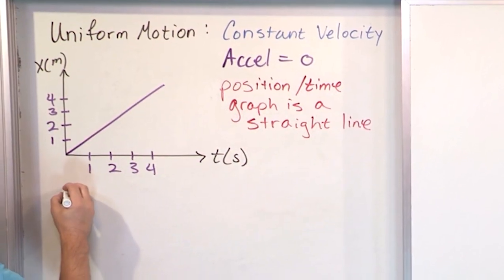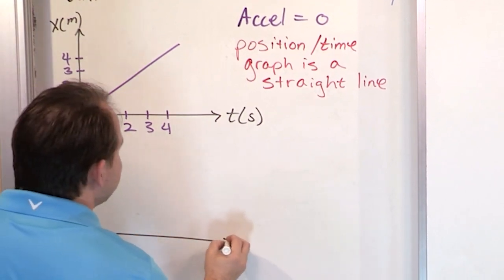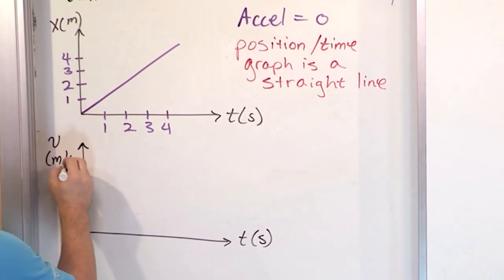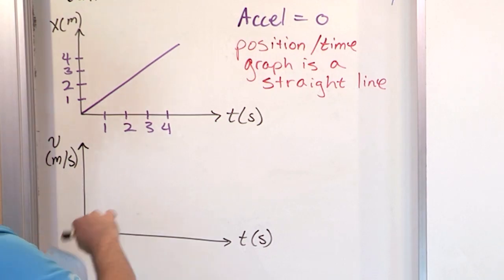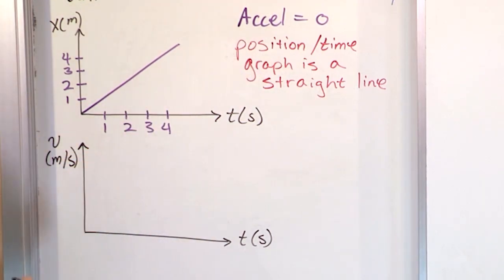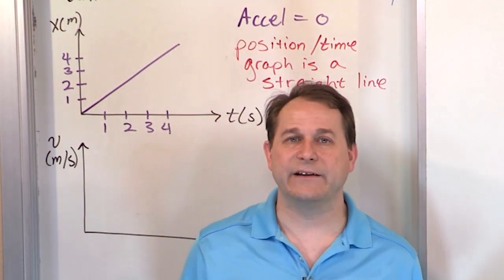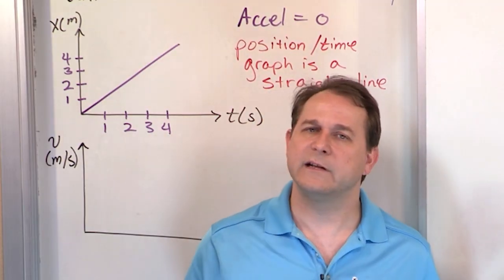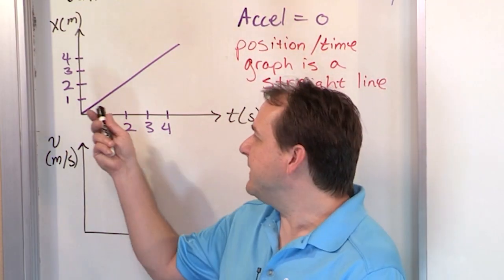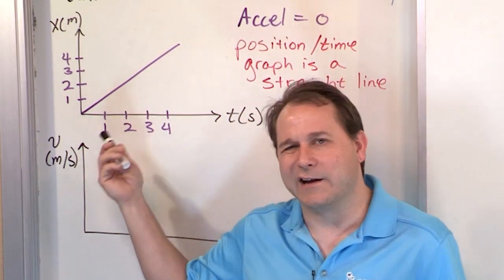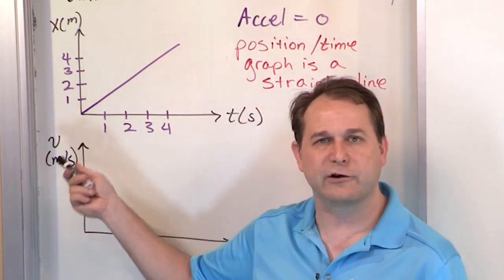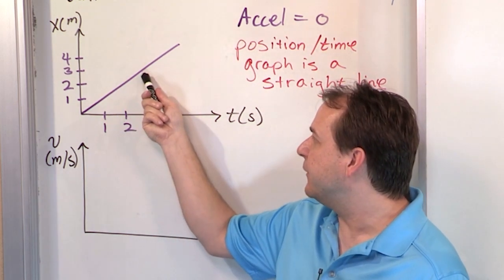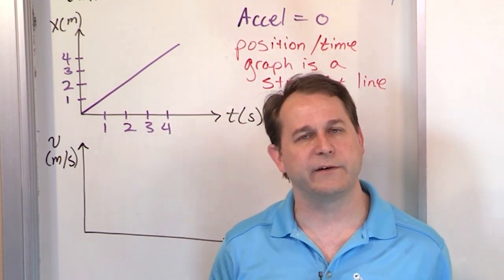Now let's look at what the velocity graph would look like for this position curve. We said over and over again that the instantaneous velocity is the slope of the line tangent to the position curve. But this position curve is just a line, and it never changes slope. So the instantaneous velocity — the slope at all points — is exactly the same. The velocity here is the same as the velocity here is the same as the velocity here.